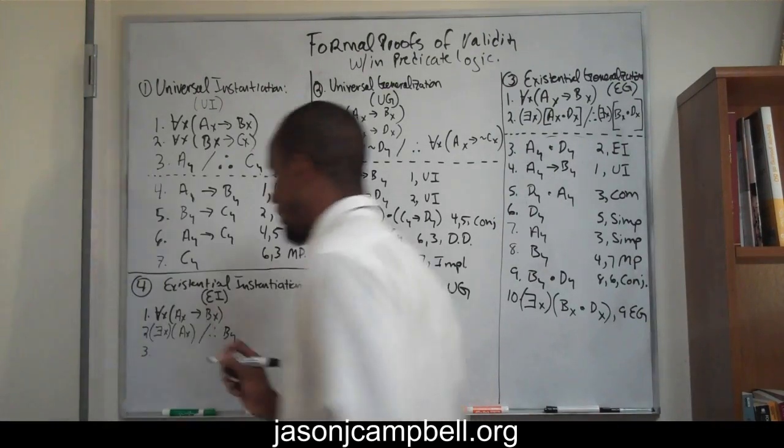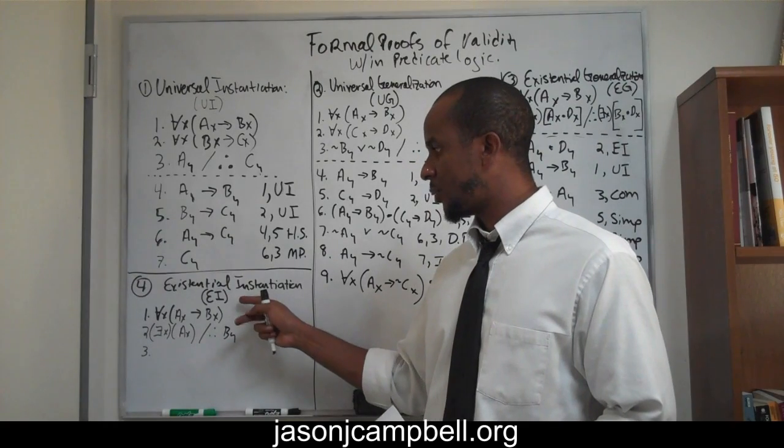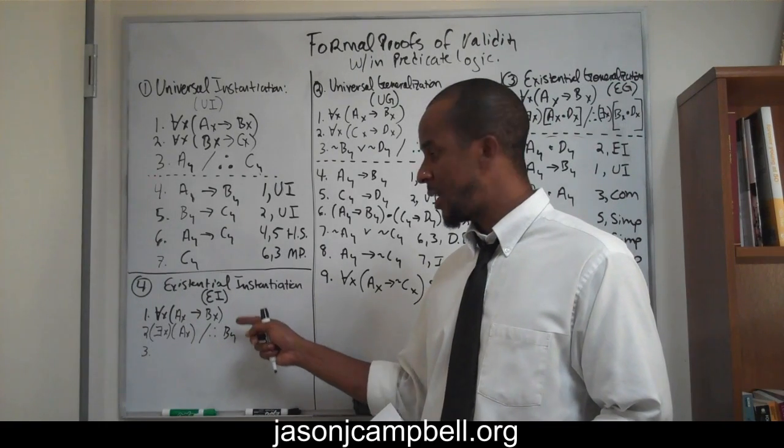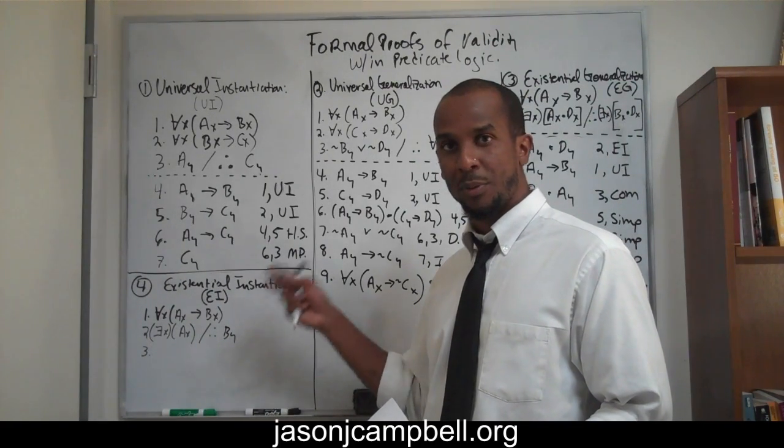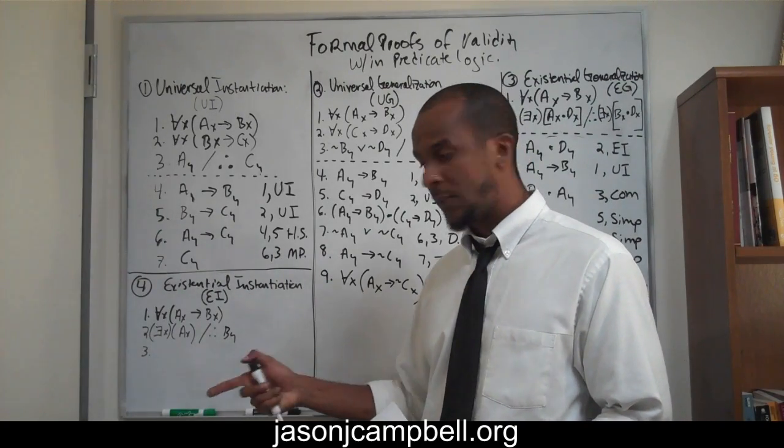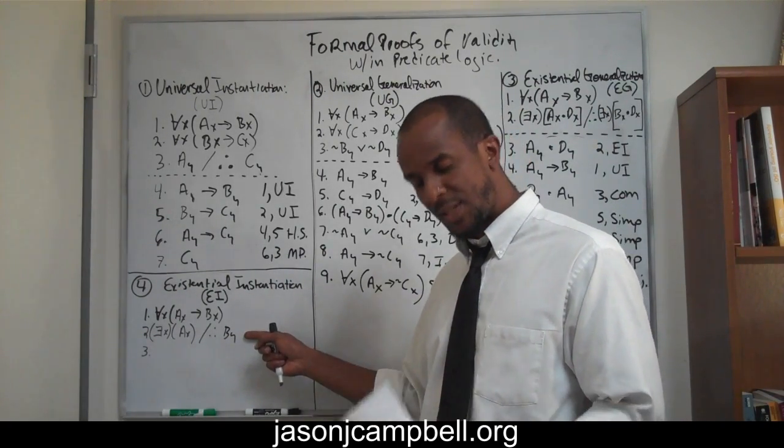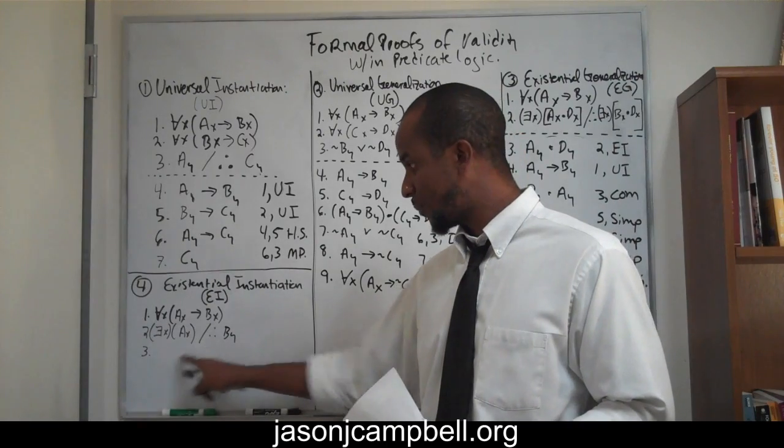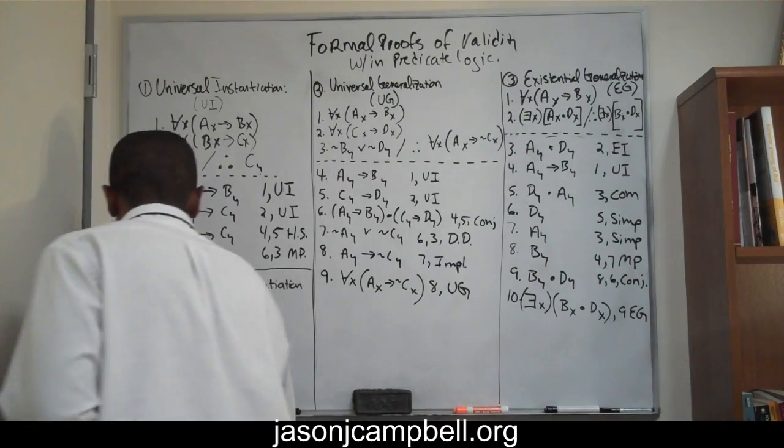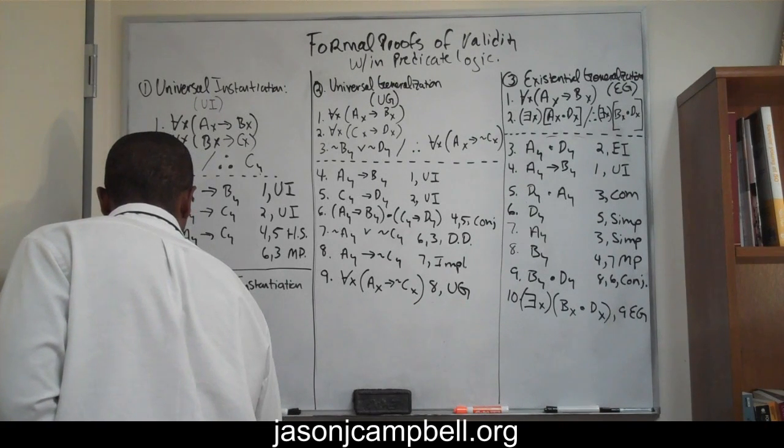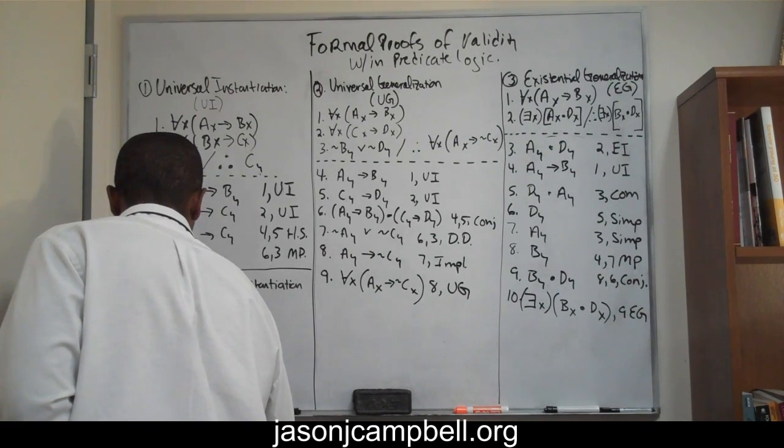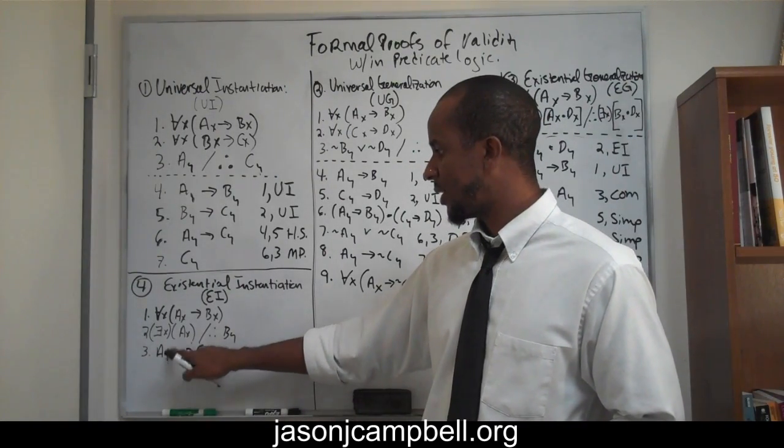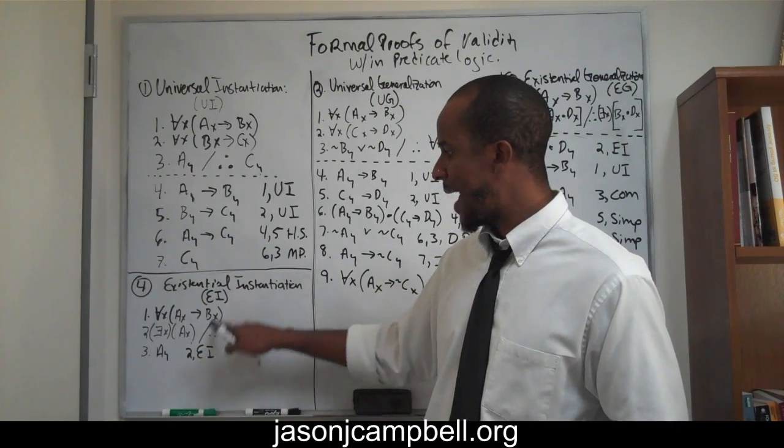Very simple. Number three, remember, anytime you're using universal instantiation and existential instantiation in a proof of validity for predicate logic, you always existentially instantiate before your universal instantiation. So, the first thing that we're going to do on line three is instantiate this a y. We know it's going to be y, so we get a y, and that is existential instantiation on line two. We get a y, because we've existentially instantiated it on line two, and we do that before we do our universal.